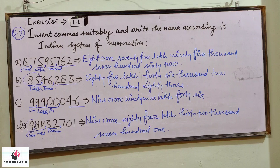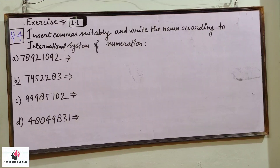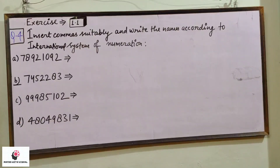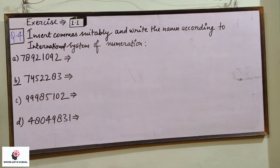I want you to keep the spelling of 'hundred' and 'lakh' correct, because many students commit mistakes in writing those spellings. Now we shall understand question number four, which asks us to insert commas suitably and write the names according to the international system of numeration. We shall put the comma according to the international number system and write the name accordingly. As we know, in the international number system we put the comma after every 3 digits.